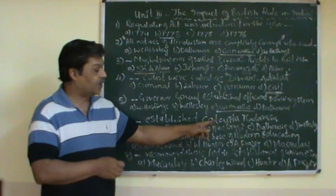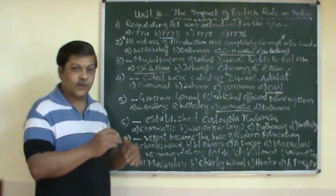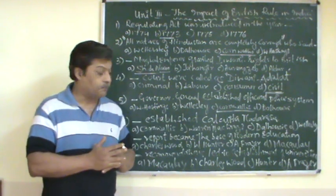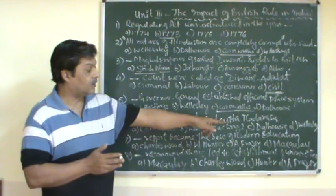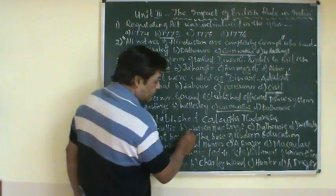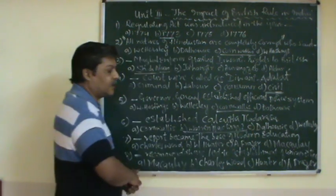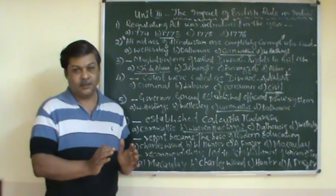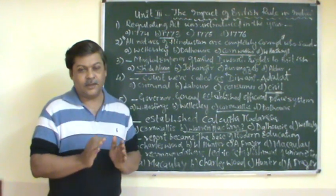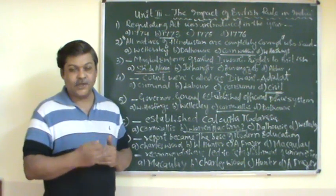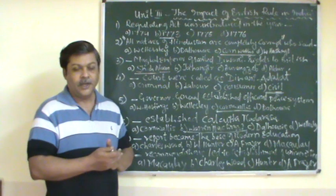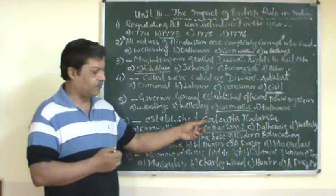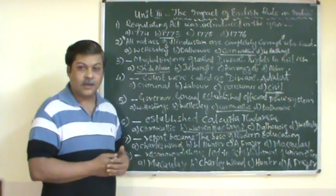Who established the Kolkata Madarasa? The question asks which Governor General was responsible for establishing the Kolkata Madarasa. The answer is Warren Hastings. This was mainly the beginning of education initiatives in India, as an initiation was taken by the British to promote education. The Kolkata Madarasa was established during the period of Warren Hastings.